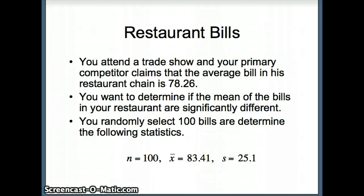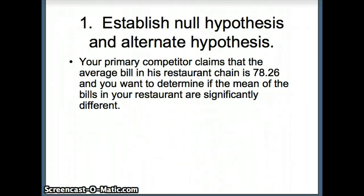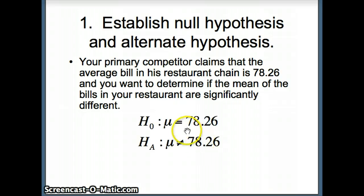Of those hundred bills, the average was $83.41 with a standard deviation of $25.10. Now establish the null and alternative hypotheses. His average is $78.26, and you want to see if yours is significantly different. Different could mean higher or lower. H naught: mu equals 78.26. H A: mu is not equal to 78.26. This is a two-tailed test.